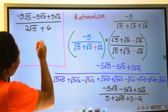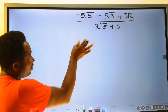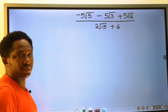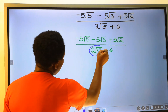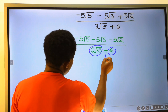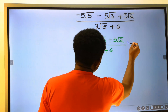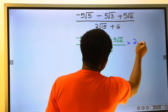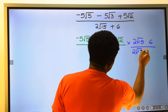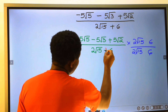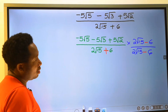To rationalize this, the first step is to write down the given expression. Next, consider the denominator — the two terms are separated by the operator plus. We are going to multiply this denominator with the numerator and also with the denominator. This operator plus will be changed to a minus.